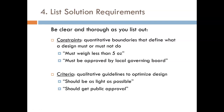Constraints are quantitative boundaries that define what a design must or must not do. After testing, you can answer yes or no to whether a constraint was met or not. On the other hand, criteria are qualitative guidelines to help optimize the design — these will not have such a rigid yes or no test result. Compare the first bullets under each category. The constraint 'must weigh less than five ounces' has a simple test: put it on a scale and see if it weighs less than five ounces. The criteria 'should be as light as possible' doesn't have a simple test. We could always design something to be lighter, but that may come at the expense of other requirements, like strength or cost.